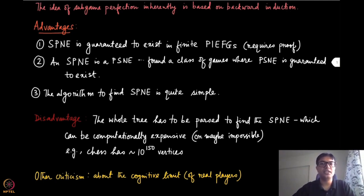And the third advantage is this algorithm of backward induction to find SPNE is very simple. I mean, it's the most intuitive thing that you can think of. But the trouble here, the disadvantage, is that to find the SPNE you will have to parse the whole tree.